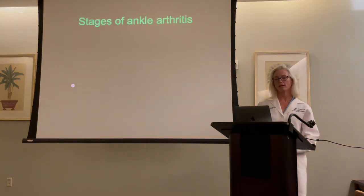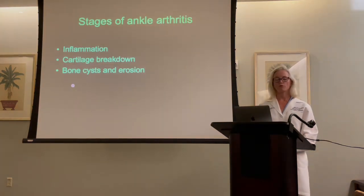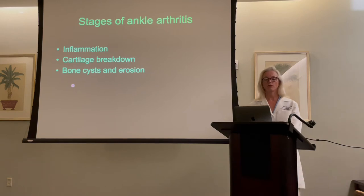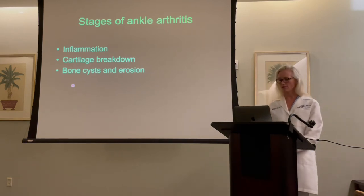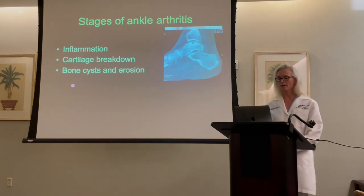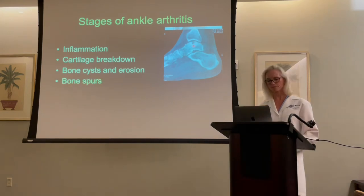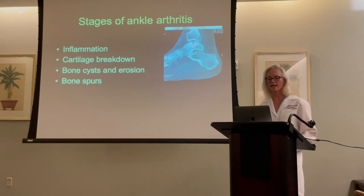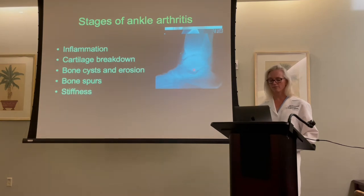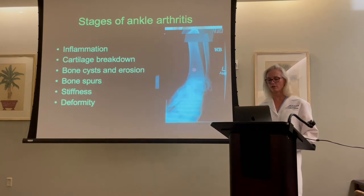The stages of ankle arthritis start with inflammation, then proceed to cartilage breakdown. Cartilage breakdown causes bone cysts and erosion. Bone spurs often form with arthritis — this is the body's natural way of trying to stiffen up a painful, sore joint, causing stiffness. Deformity is also associated with end-stage ankle arthritis, as you can see there.